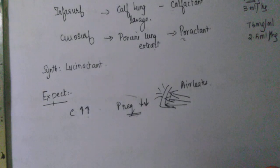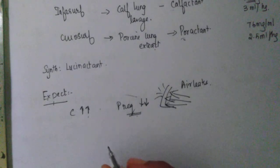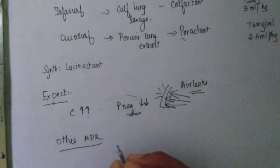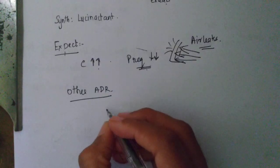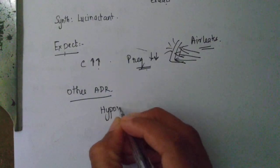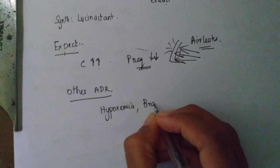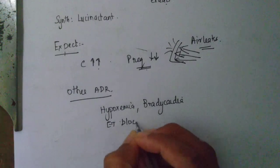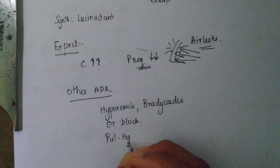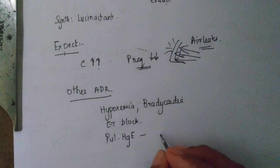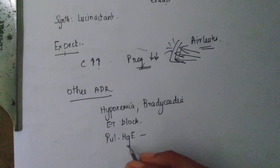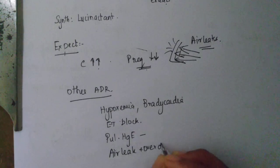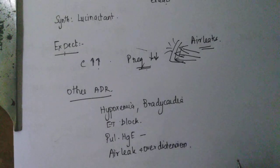Suppose you are not doing that, what will happen? One of the adverse reactions is air leaks. What are the other adverse drug reactions that you can expect when you are giving a surfactant? You can expect some amount of hypoxemia, bradycardia, there can be an ET tube block, there can be pulmonary hemorrhage. But it is not associated with much increased mortality compared to other causes of pulmonary hemorrhage and air leaks, over distension and air leaks if you are not adjusting the pressure appropriately.